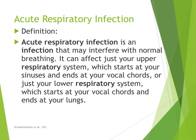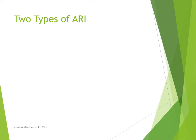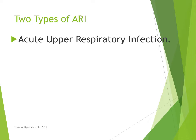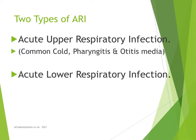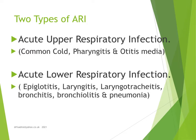The two types of acute respiratory infections are: first, acute upper respiratory infection, which is identified when a person has common cold, pharyngitis, or otitis media. If not treated well, it leads to acute lower respiratory infection, which can cause epiglottitis, laryngitis, laryngotracheitis, bronchitis, bronchiolitis, and ultimately pneumonia.